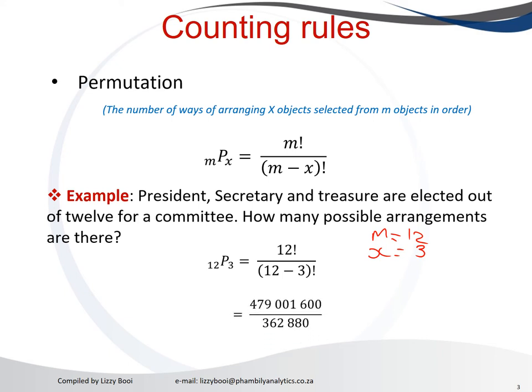12 factorial will be 12 times 11 times 10 until times 2 times 1. And that will give you the top part where 12 factorial will give you 479,001,600.